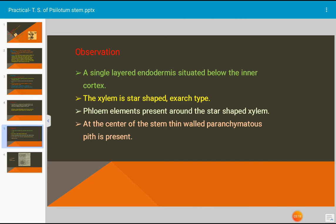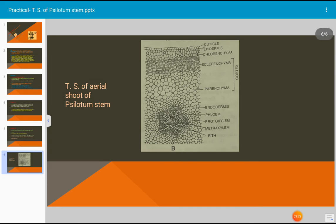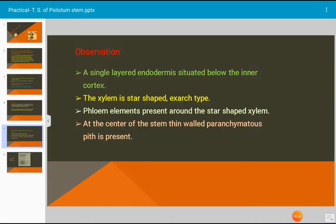The xylem is star shaped, exarch type. Why is it exarch type? The protoxylem is placed at the peripheral region and metaxylem is placed at the central region of this star shaped xylem. Such situation is described as exarch type. The phloem elements present around the star shaped xylem.